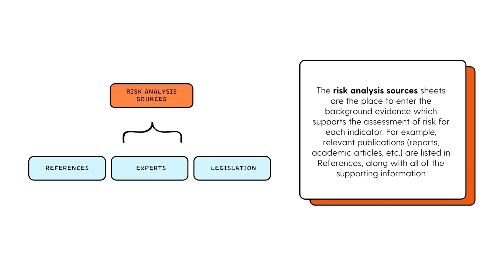We also have three sheets — References, Experts, and Legislation — where you can supply the sources that inform the risk analysis and risk assessment that you're doing. The risk analysis sources are the places to enter the background evidence which supports the assessment of risk for each indicator. For example, this could include relevant publications, reports, academic articles, etc., as well as experts who were consulted and relevant legislation. All of the supporting information for these items is collected on these sheets.